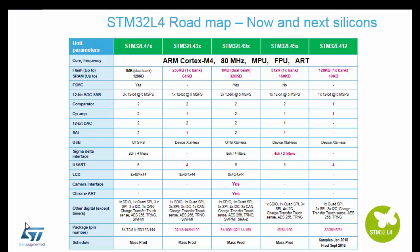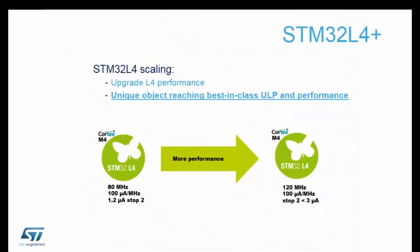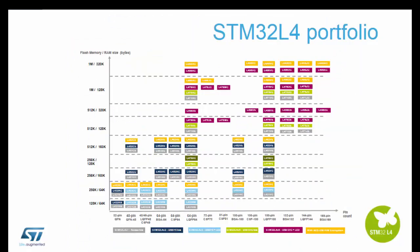This is an overview of all the devices, crossing peripherals and coordinates. We can have at least four to six different devices, and that's important because we have the full capability to select the most suitable device for a real application — from the minimum package, 32-pin QFN, very compact, up to 144-pin BGA.